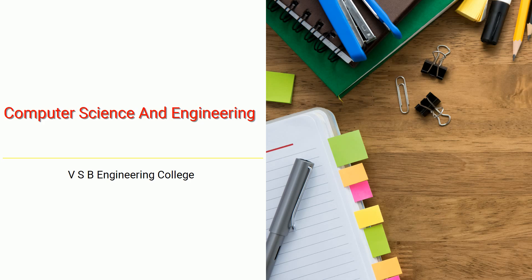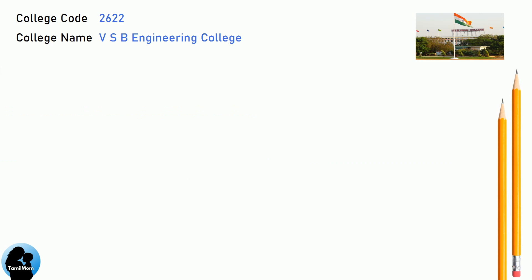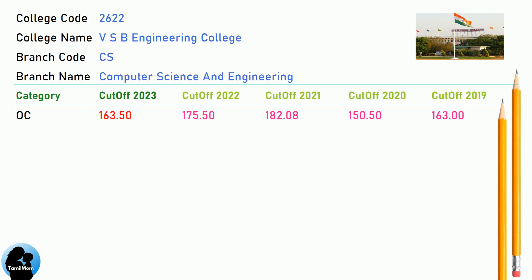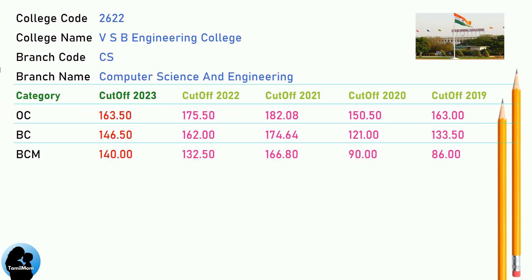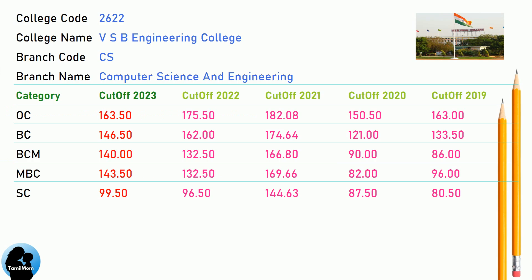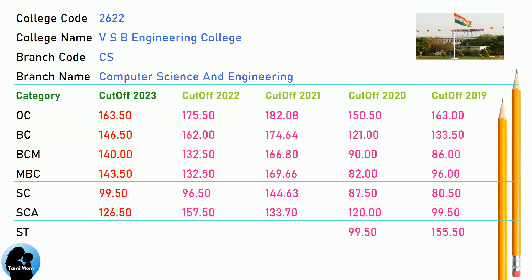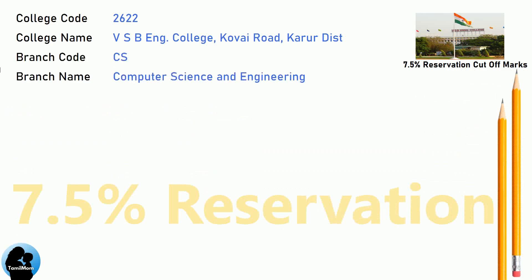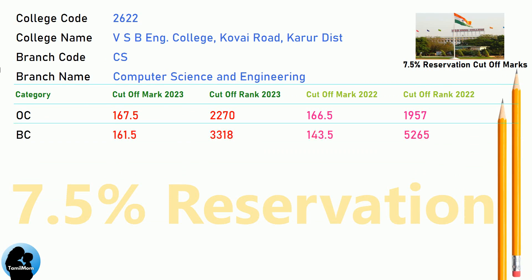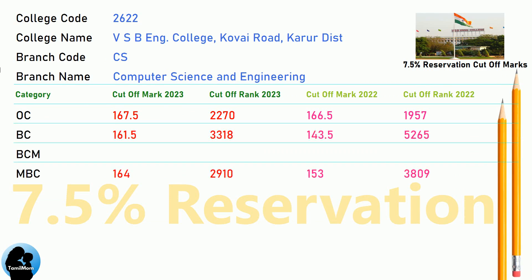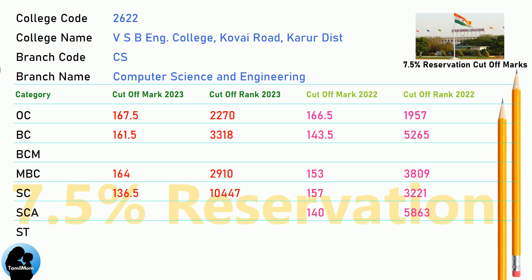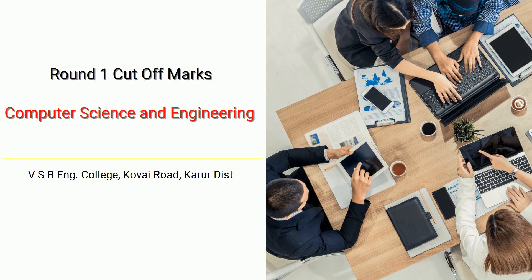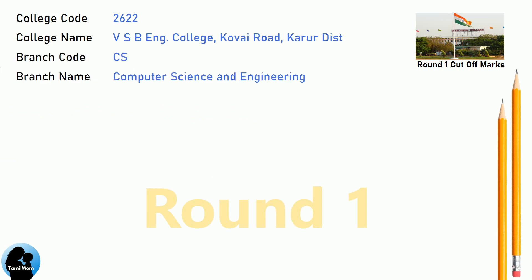DNA Cut-Off for VSB Engineering College in Computer Science and Engineering. DNA 7.5 Reservation Cut-Off for VSB Engineering College in Computer Science and Engineering. DNA Round 1 Cut-Off for VSB Engineering College in Computer Science and Engineering.